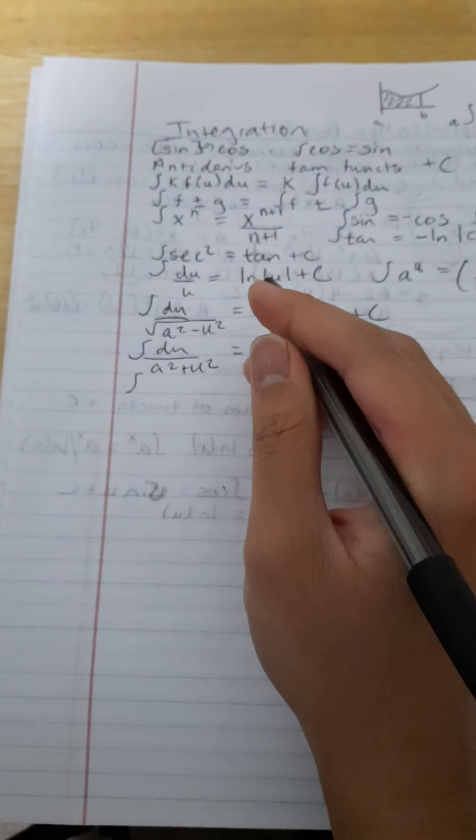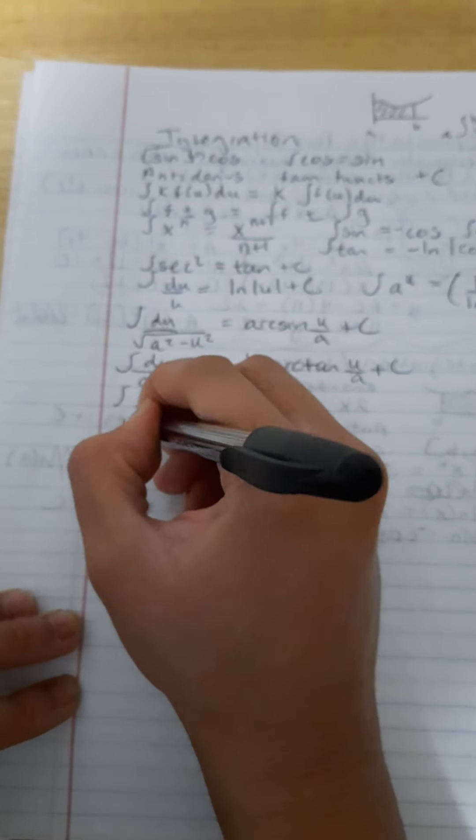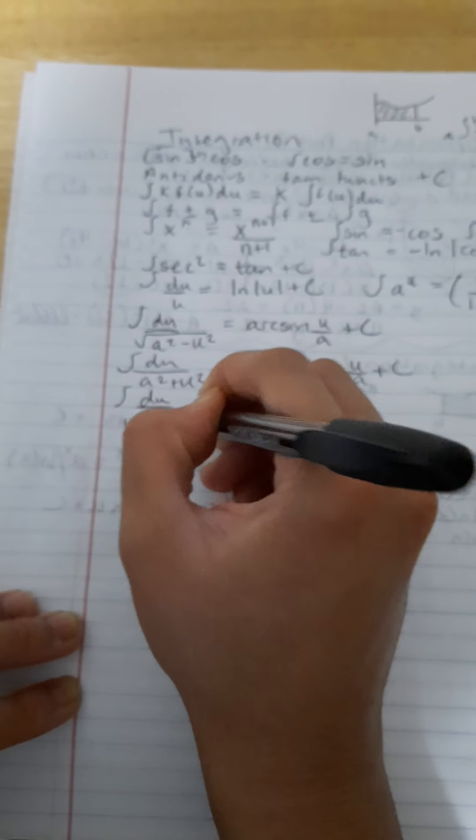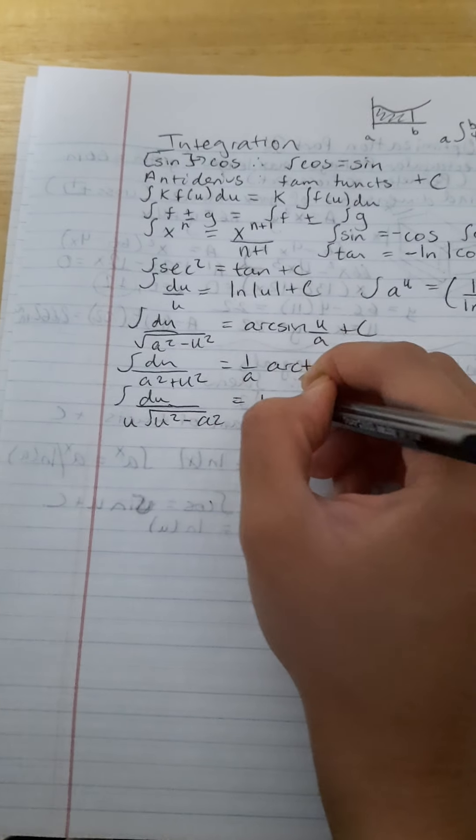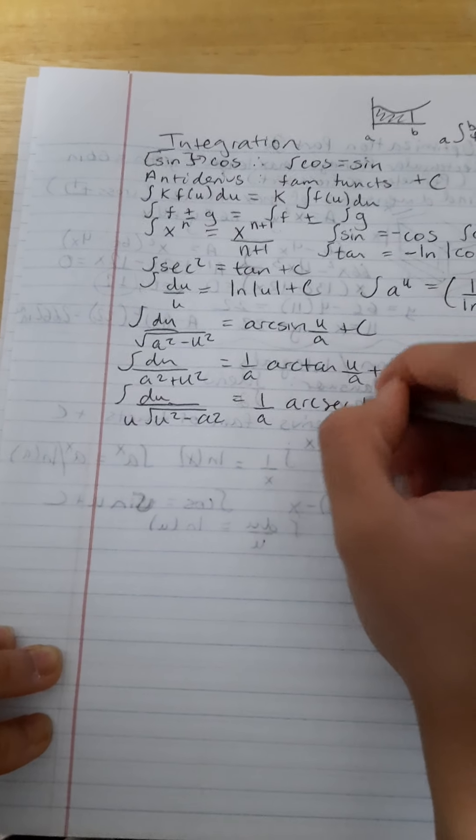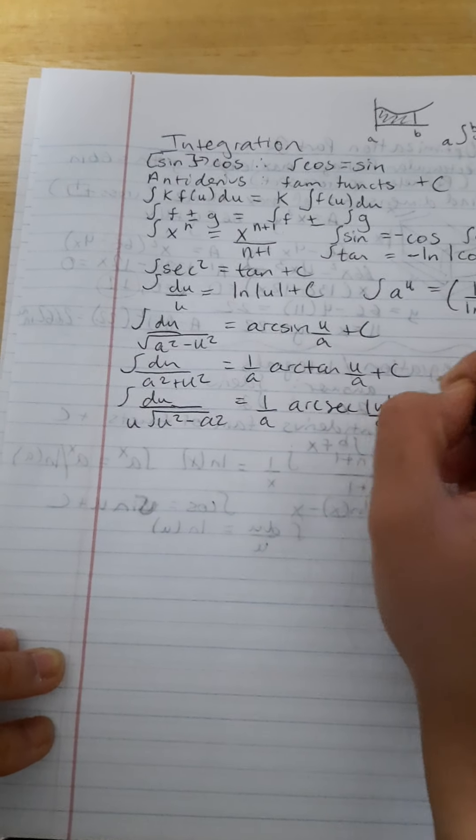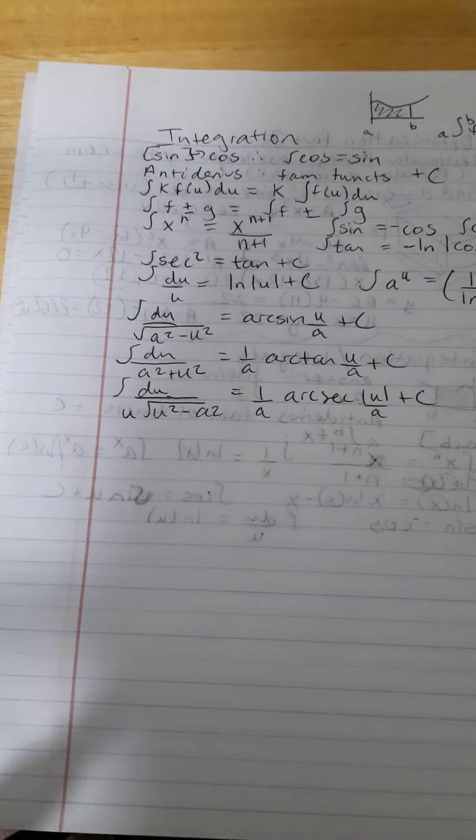Let's have du over a squared plus u squared is equal to 1 over a arc tan u over a plus c. The last one of those, du over u times square root of u squared minus a squared, is equal to 1 over a arc secant u over a plus c.